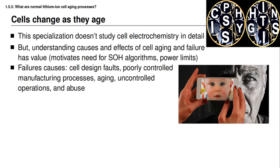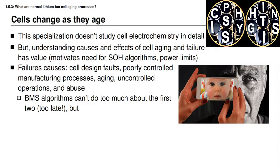There are many possible causes of failures in lithium-ion battery cells, and these include things like design faults and poorly controlled manufacturing processes, or some normal aging mechanisms, or some abnormal aging or degradation due to uncontrolled operations and abuse. Battery management systems can't do very much about the first two — about design faults or manufacturing faults — because the battery management system is using cells that are already manufactured and already in the product.